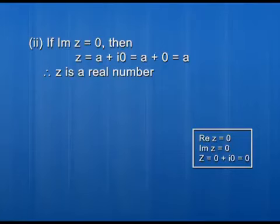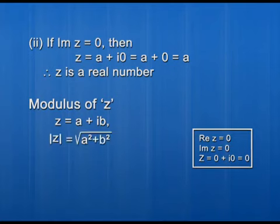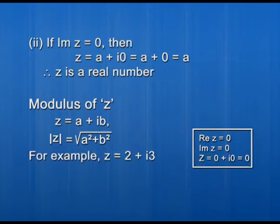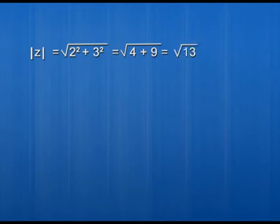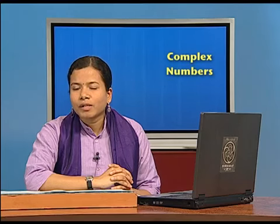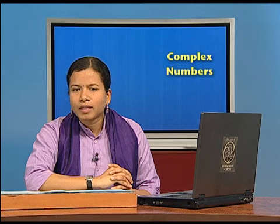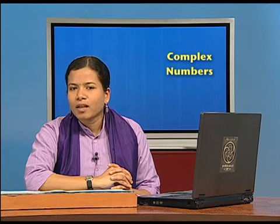Now let us see how to calculate the modulus of a complex number. Suppose z equals a plus ib. Then the modulus of z, denoted by |z|, is the non-negative square root of a squared plus b squared. For example, if z equals 2 plus i3, then the modulus of z is the square root of 2 squared plus 3 squared, which equals the square root of 4 plus 9, giving us the square root of 13.